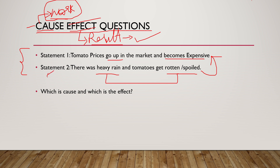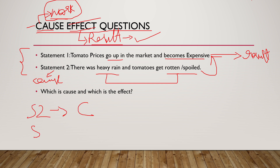So statement two is the cause — because there was heavy rain, the prices of tomato increased. What is the result? The prices of tomato shot up. The work done was heavy rain and destroying tomatoes, and the result is tomato prices going up. Hence, statement two is the cause and statement one is the effect.